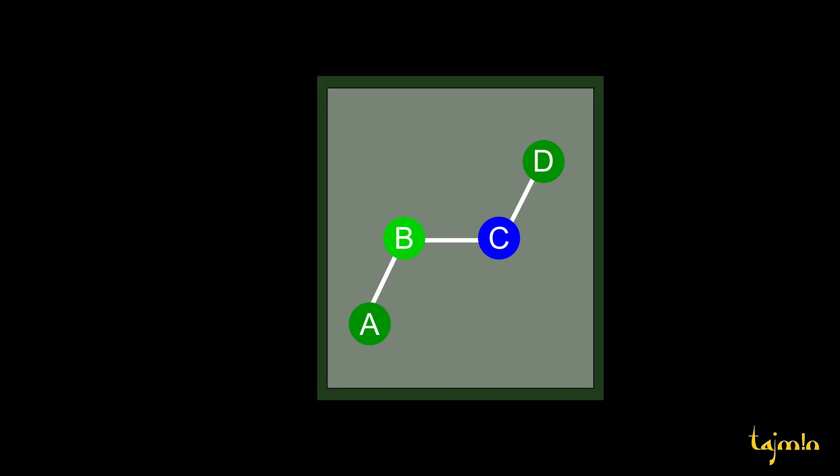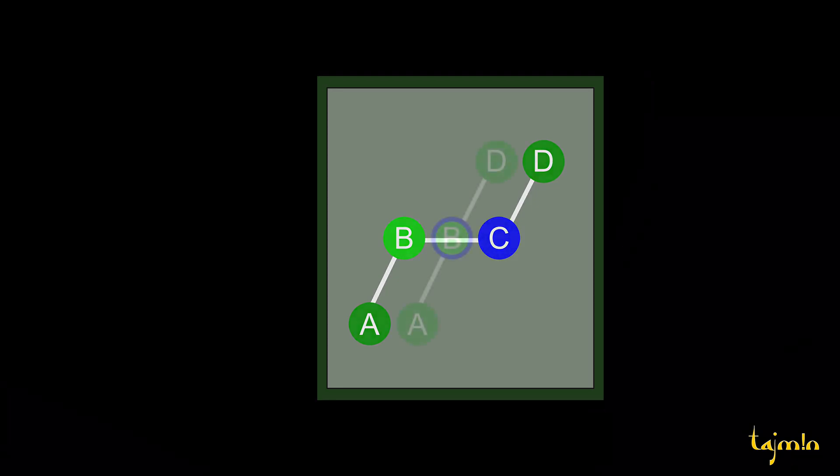Let us assume these four atoms as ABCD, where bond BC rotation angle is being calculated. Now look through the bond BC by keeping atom B towards yourself.